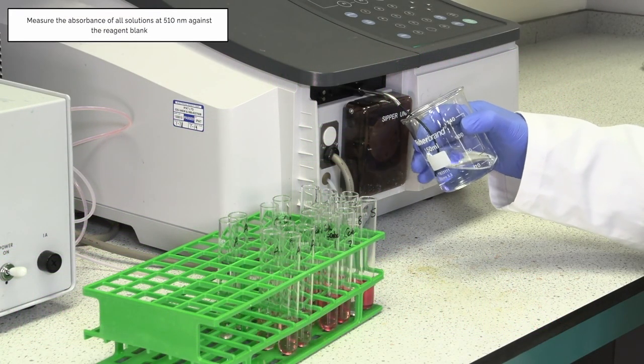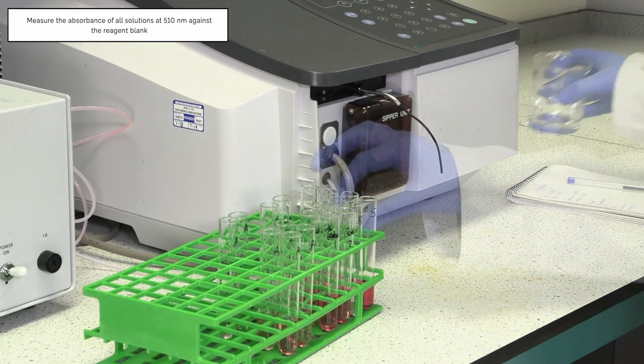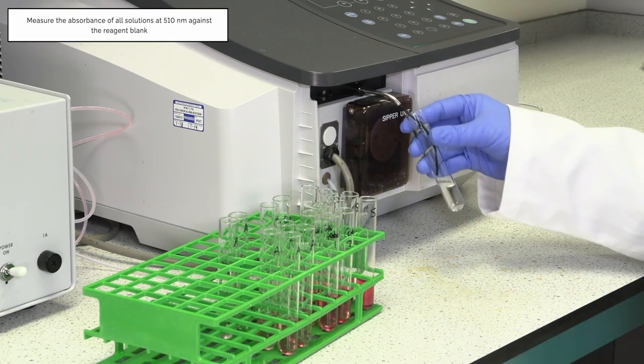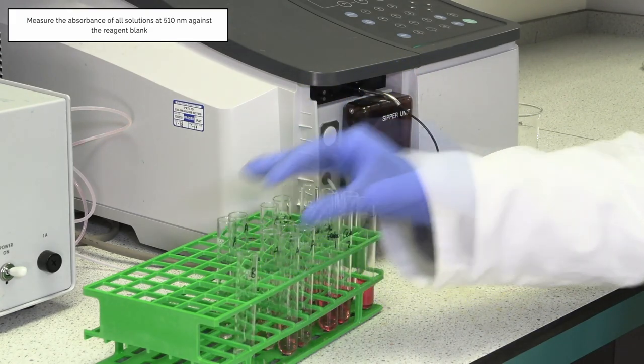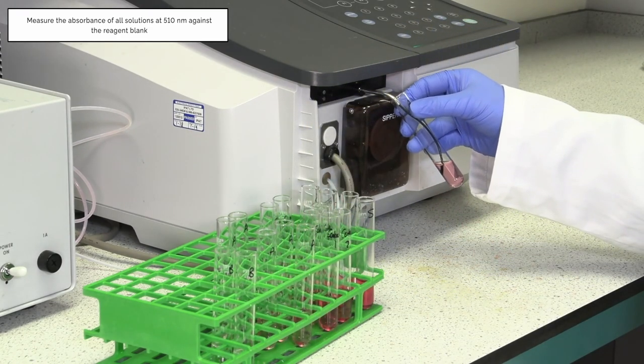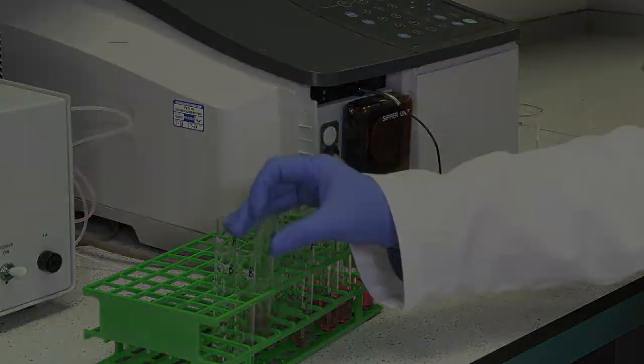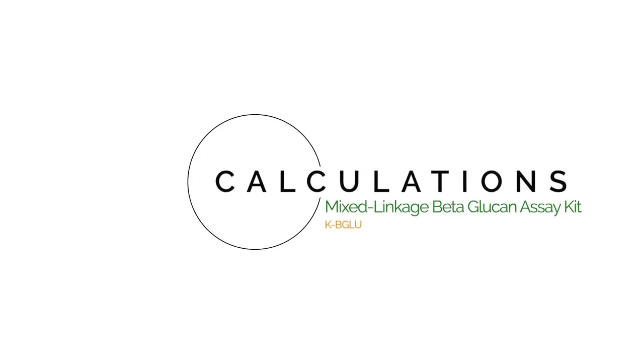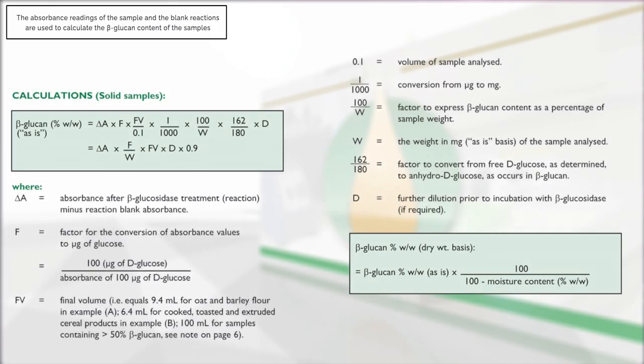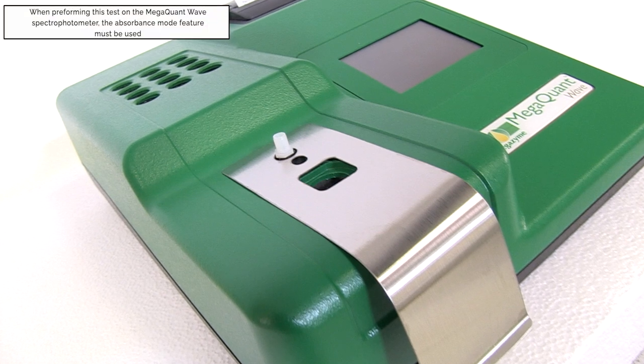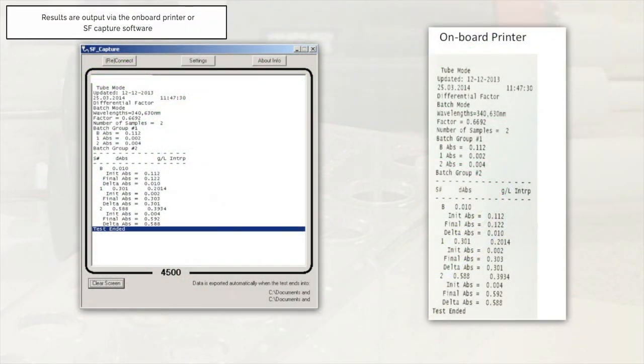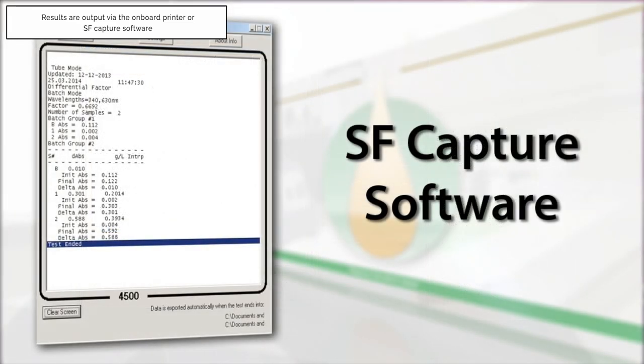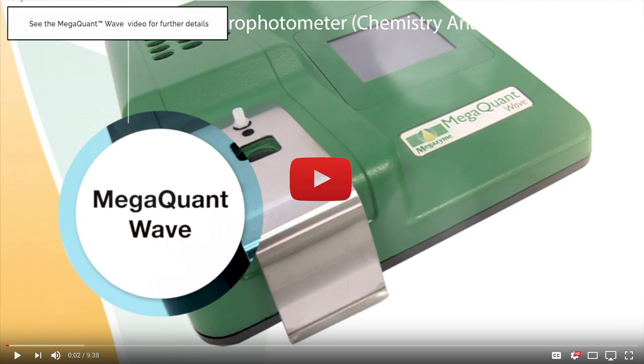Measure the absorbance of all solutions at 510 nanometers against the reagent blank. The absorbance readings of the sample and the blank reactions are used to calculate the beta-glucan content of the samples. When performing this test on the Megaquant Wave spectrophotometer, the absorbance mode feature must be used. The results will be printed via the onboard printer or the data can be exported to a computer using the SF capture software. Please see our Megaquant Wave video for further details.